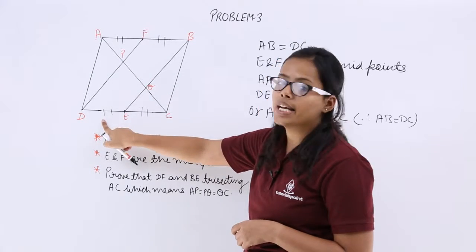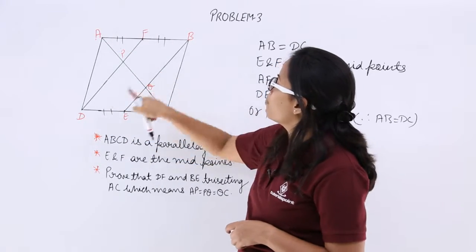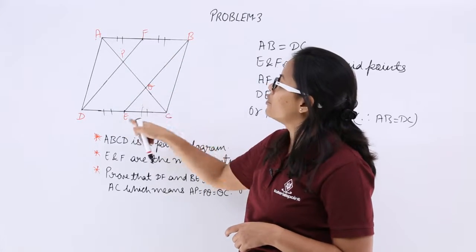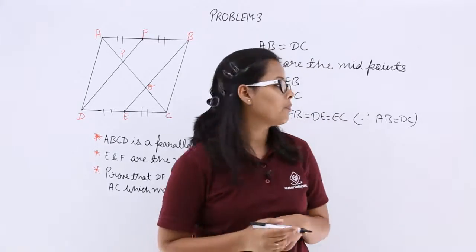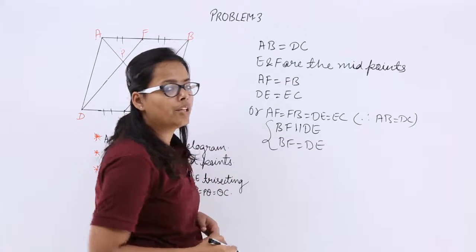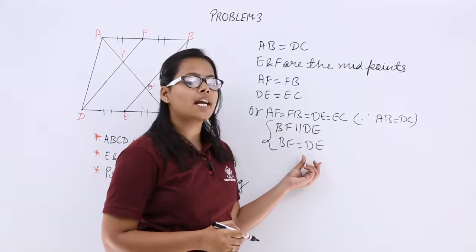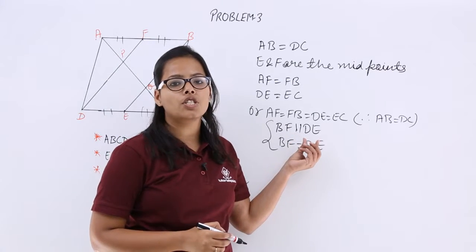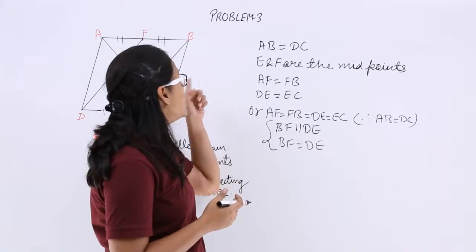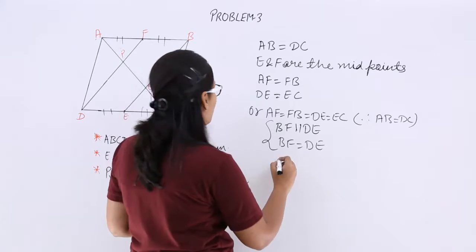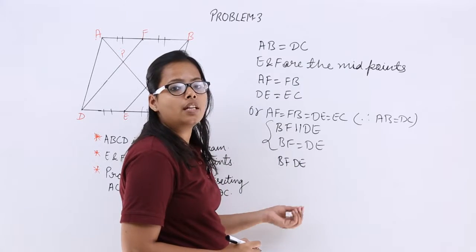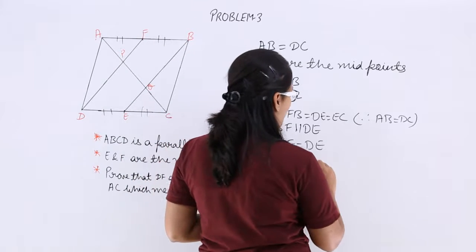From here you can see that this side is equal to this side, and this is also in parallel with CD. When AB is in parallel with CD, BF will also be in parallel with DE. From both of these conditions, you know that opposite sides are equal and parallel to each other, so this quadrilateral BFDE will become a parallelogram.